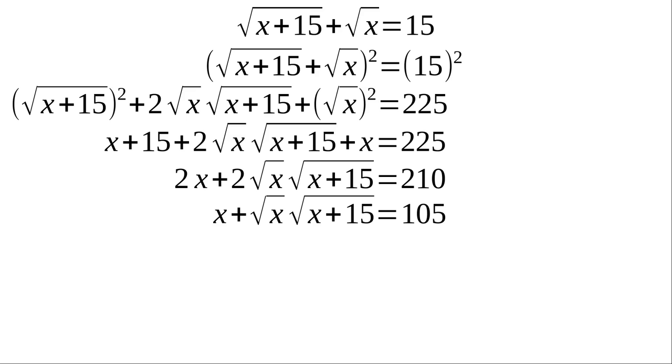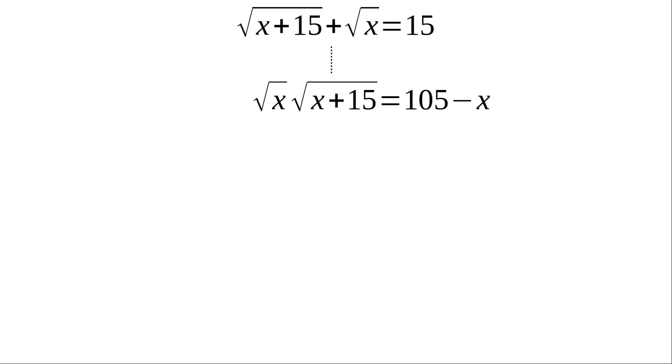Now we can move the lone x over to the other side. And that gives us the square root setup is equal to some value. Now we're down to having a square root equal something. And again, to get rid of the square root sign, we want to square it.